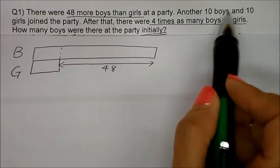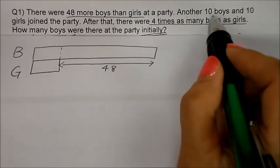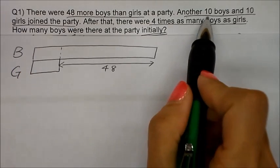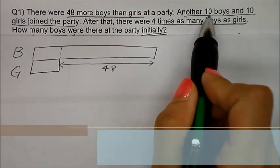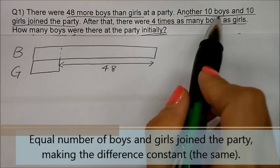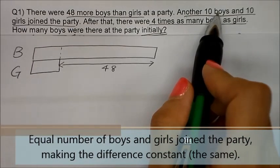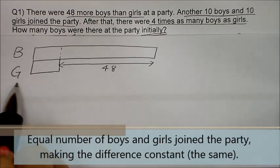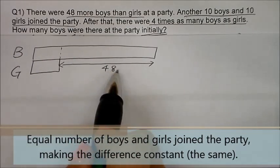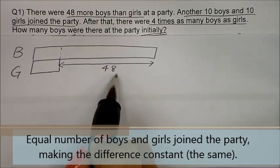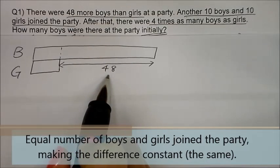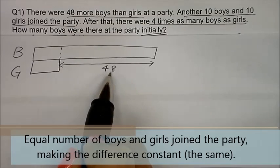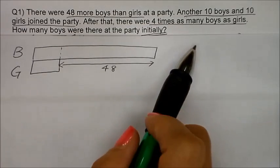Another ten boys and ten girls join the party. If you notice, it is an equal number of girls and boys that join the party. That means if ten boys join the boys and ten girls join the girls, the difference remains the same. That is why this is a constant difference question — because the difference between the boys and girls stays the same.